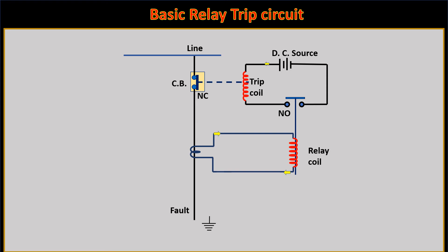Let's understand it with this diagram. As shown here, after the occurrence of a fault on a transmission line, this current transformer senses the fault current and the relay coil closes the trip circuit after sensing the fault current with the help of this CT. Current will pass through the relay coil and it closes this normally open contact. Because of current flow through the trip coil, it gets energized and attracted — in other words, it opens the contact of the circuit breaker, and that is how the faulty section is isolated.